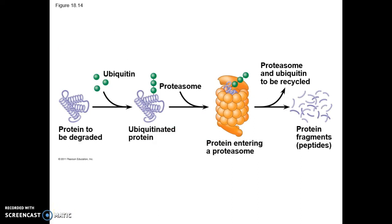Here we see multiple ubiquitin molecules attached to a protein. This ubiquitin-tagged protein is recognized by the proteasome, which is shaped like a giant trash can. The proteasome unfolds the protein, sequesters it within a central cavity, and then enzymatic components of the proteasome cut apart the protein into small peptides, which can be further degraded by other enzymes in the cytosol.